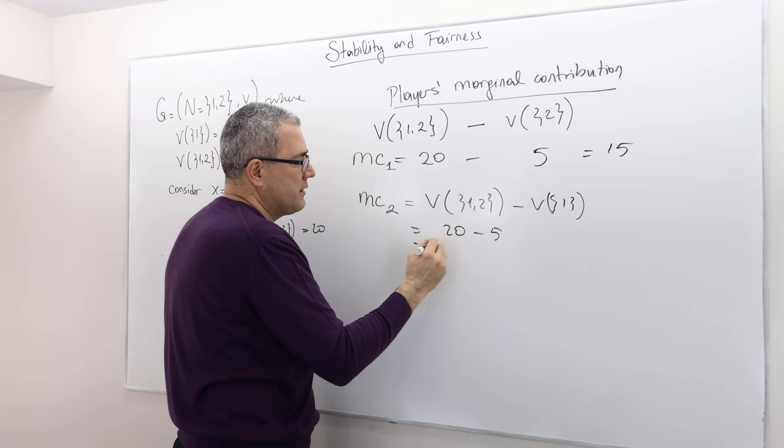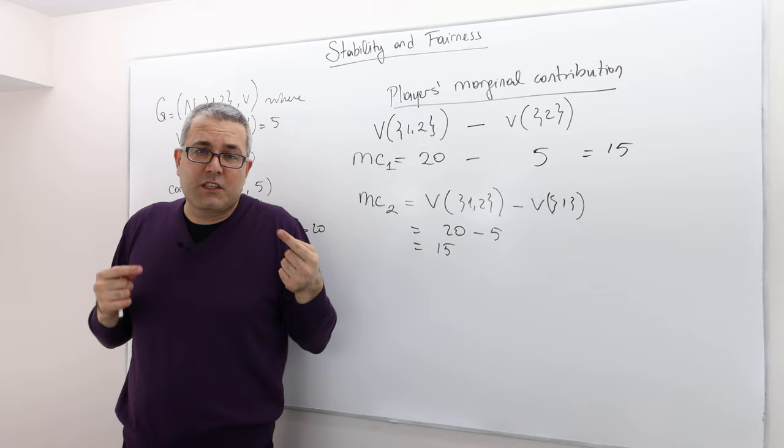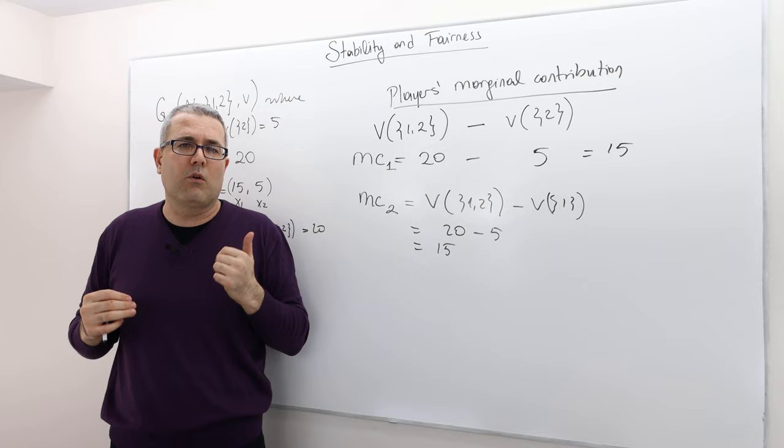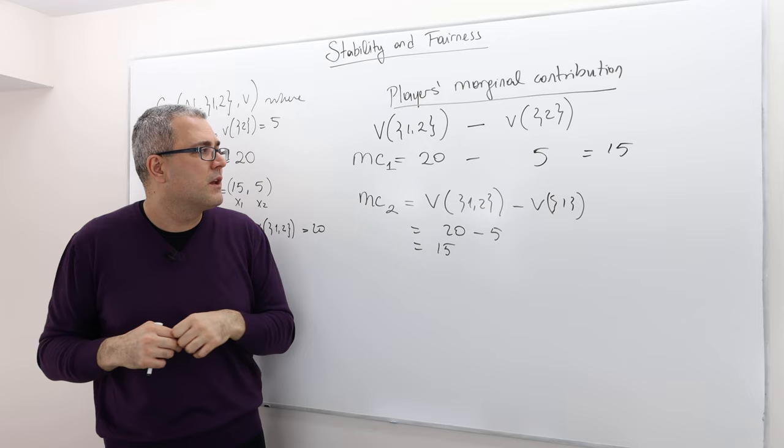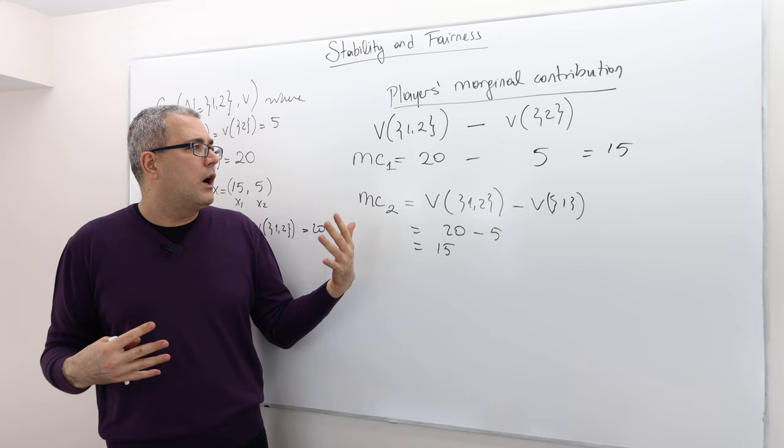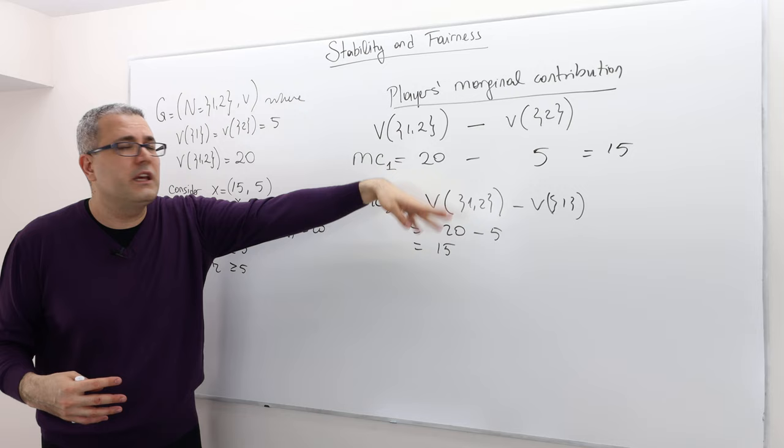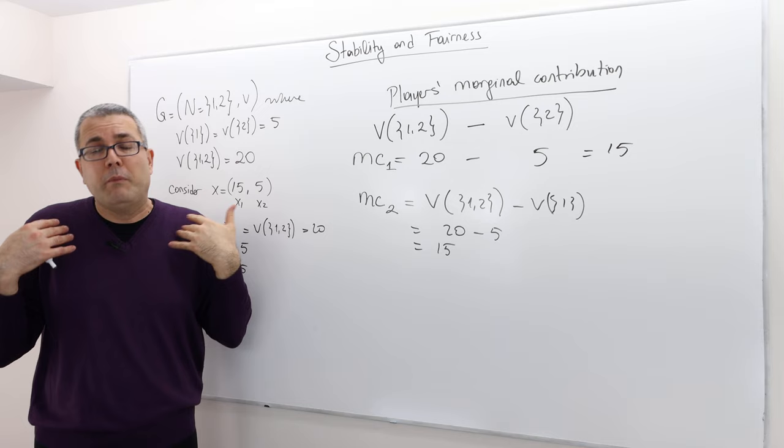Huh. So marginal contribution of player 1 plus marginal contribution of player 2 is not going to be equal to the worth of this coalition. Unfortunately, 15-15 adds up to 30, more than the worth. So the thing is, you can say, well, then the fair outcome should be such that the payoffs are proportional to each player's contribution to this coalition, right? This is one, to me, perfectly reasonable way of defining fairness.